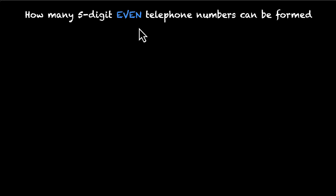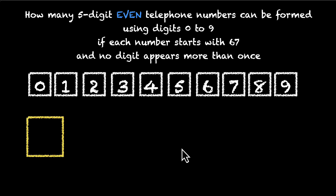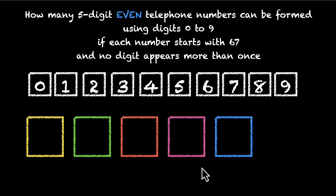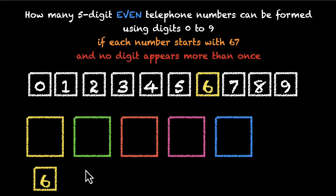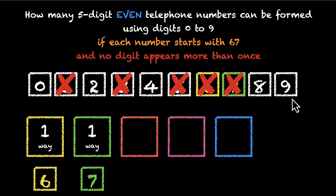Here's the second part. This time we have to make even 5-digit telephone numbers using digits 0 to 9, starting with 6, 7, with no repeated digits. We place 6 and 7 in one way each. Now, because we have a constraint on the last digit (it must be even), let's take care of the blue box first. It can't be 1, 3, 5 (odd), and it can't be 6 or 7 (already used), and it can't be 9. So the options are 0, 2, 4, and 8 — four options, so 4 ways to fill the blue box.